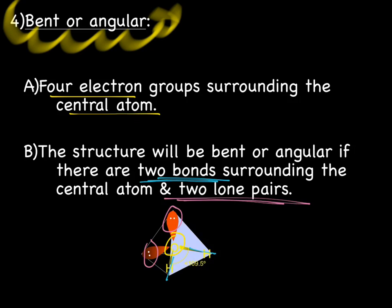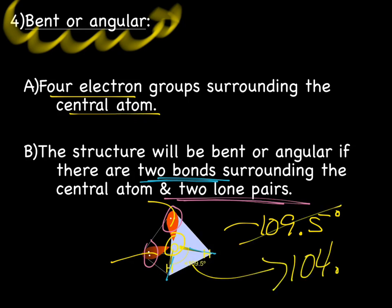Again, because there are four electron groups, if all four electron groups were equidistant, they would be at an angle of 109.5 degrees. However, again, they are not equidistant. These two lone pairs are pushing against each other, trying to get as far away from each other as possible, which then decreases the bond angle of the two bonds. So their actual angle is 104.5 degrees.